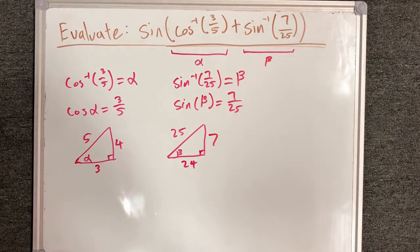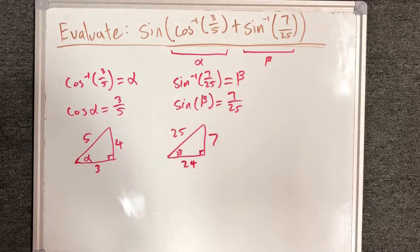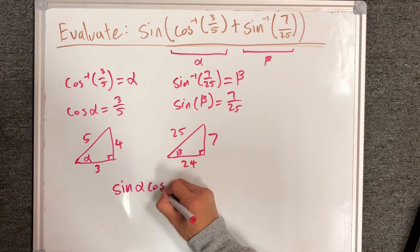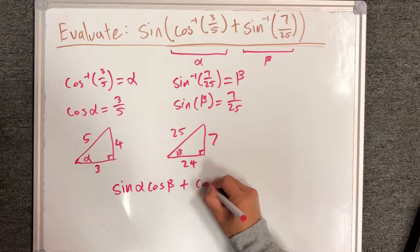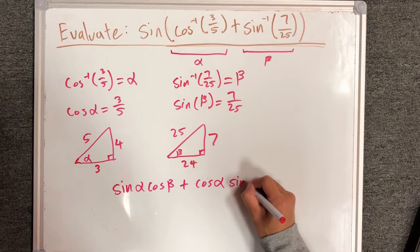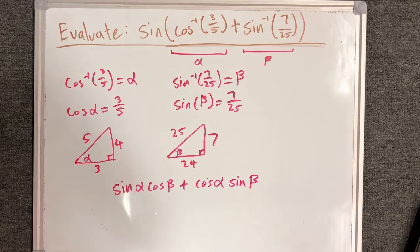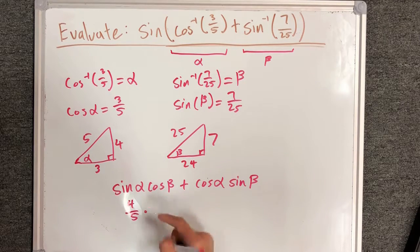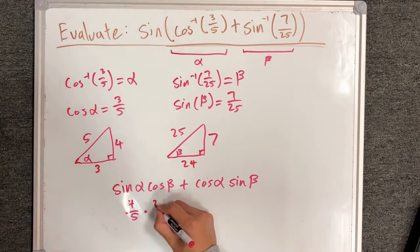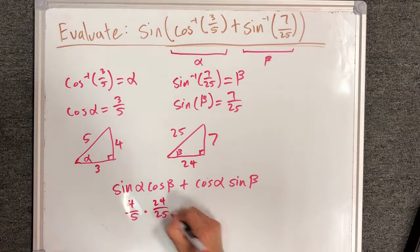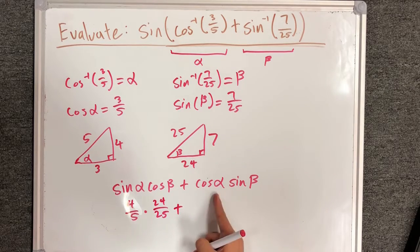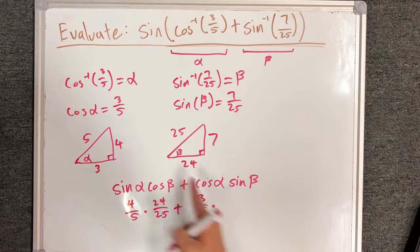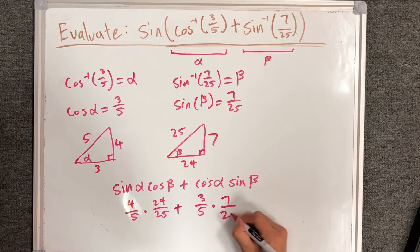I want sine of alpha plus beta. I know that this is angle addition, so this will be sine of alpha cosine of beta plus cosine of alpha sine of beta. Sine of alpha will be 4 over 5, cosine of beta will be 24 over 25, plus cosine of alpha is 3 over 5 times sine of beta is 7 over 25.